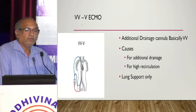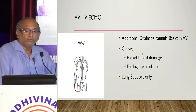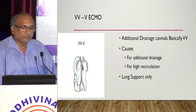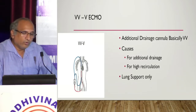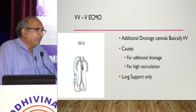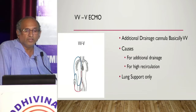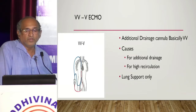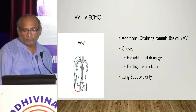Looking at variants of ECMO one by one: VV-VA ECMO has two additional drainages. We require two drainages — one reason is if drainage is not sufficient, you can drain from the jugular vein and from the femoral vein, with the return going to the right atrium. This is known as VVV and is commonly used when drainage is insufficient and when there is high recirculation. It is also called triple cannulation.